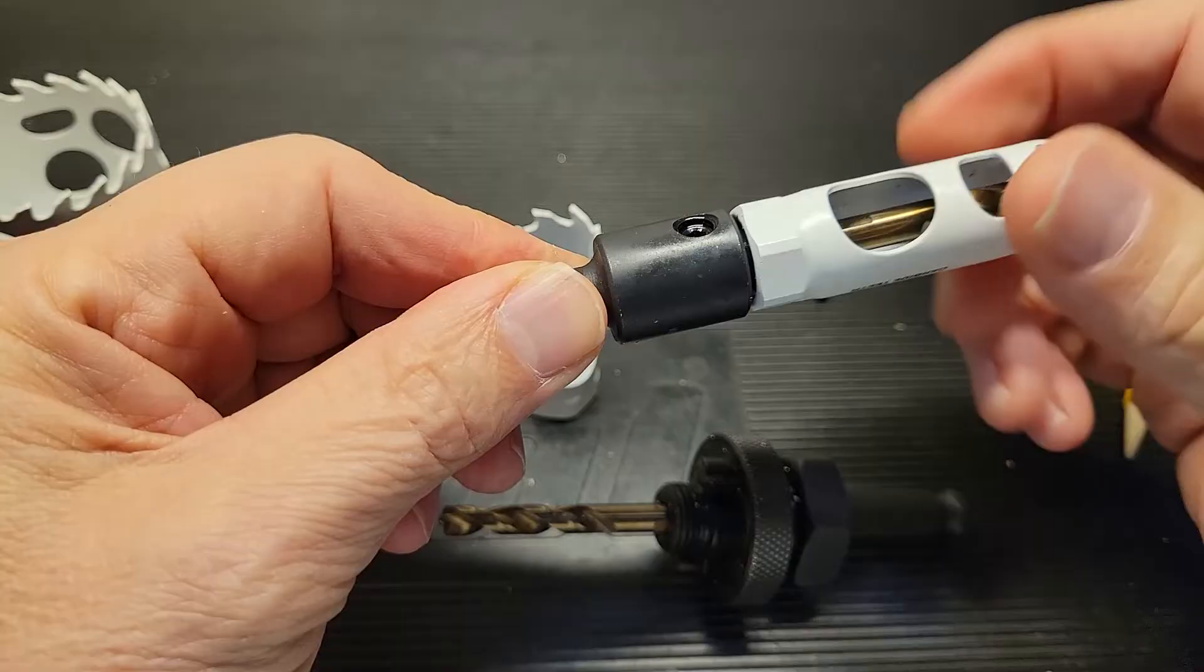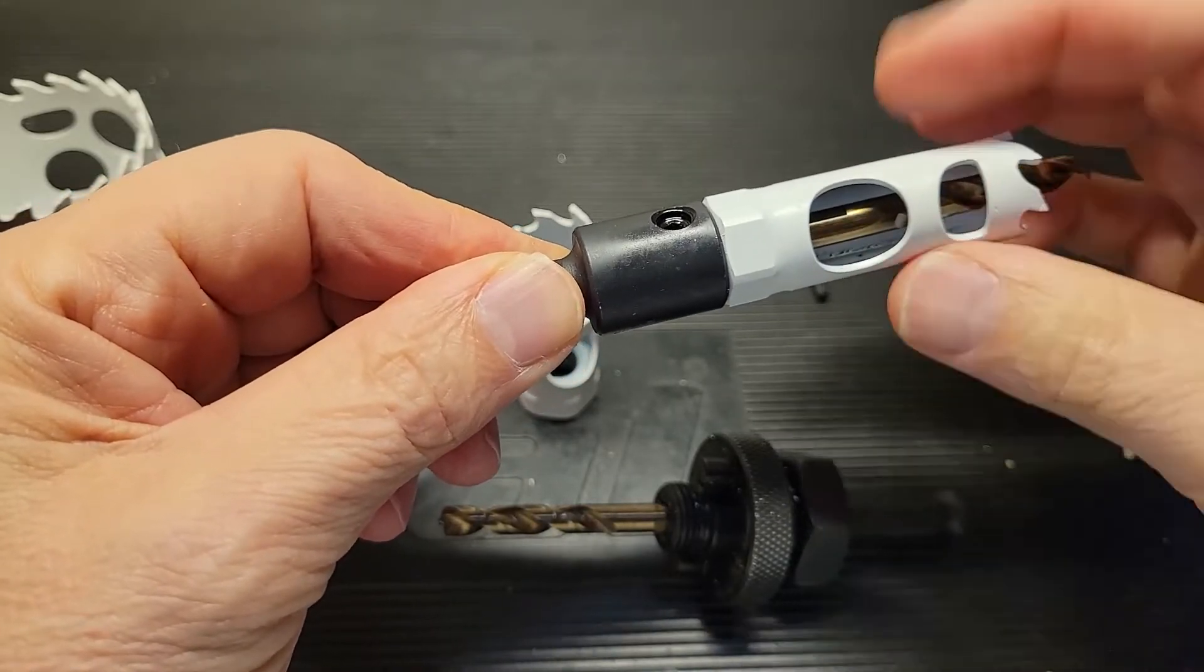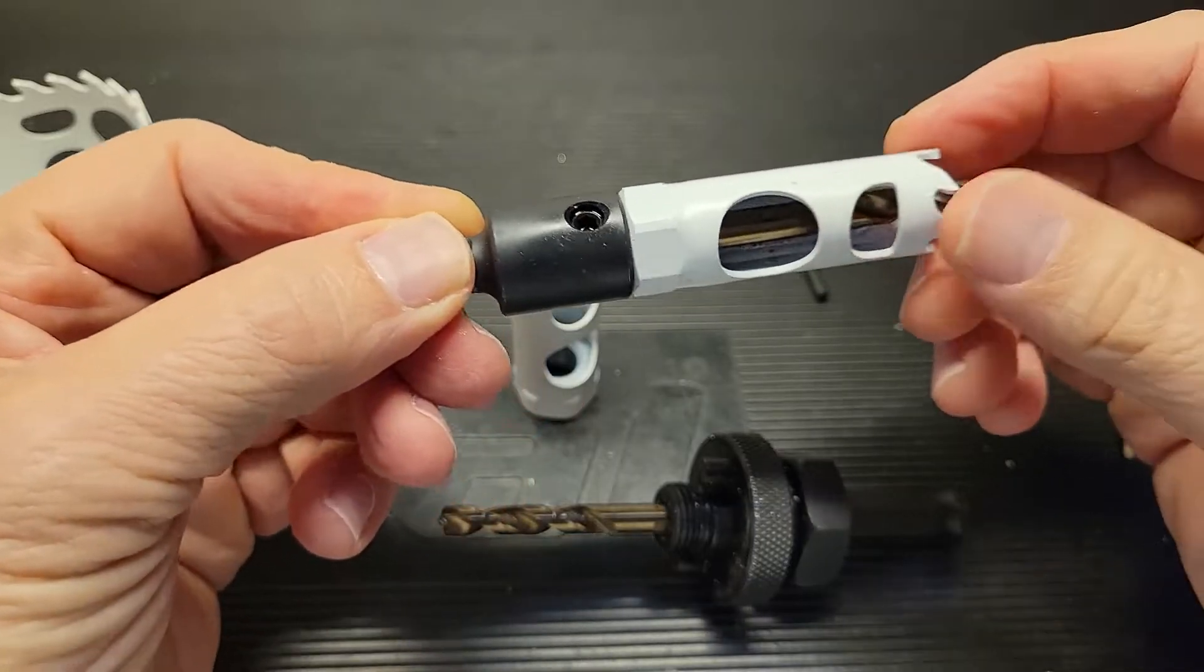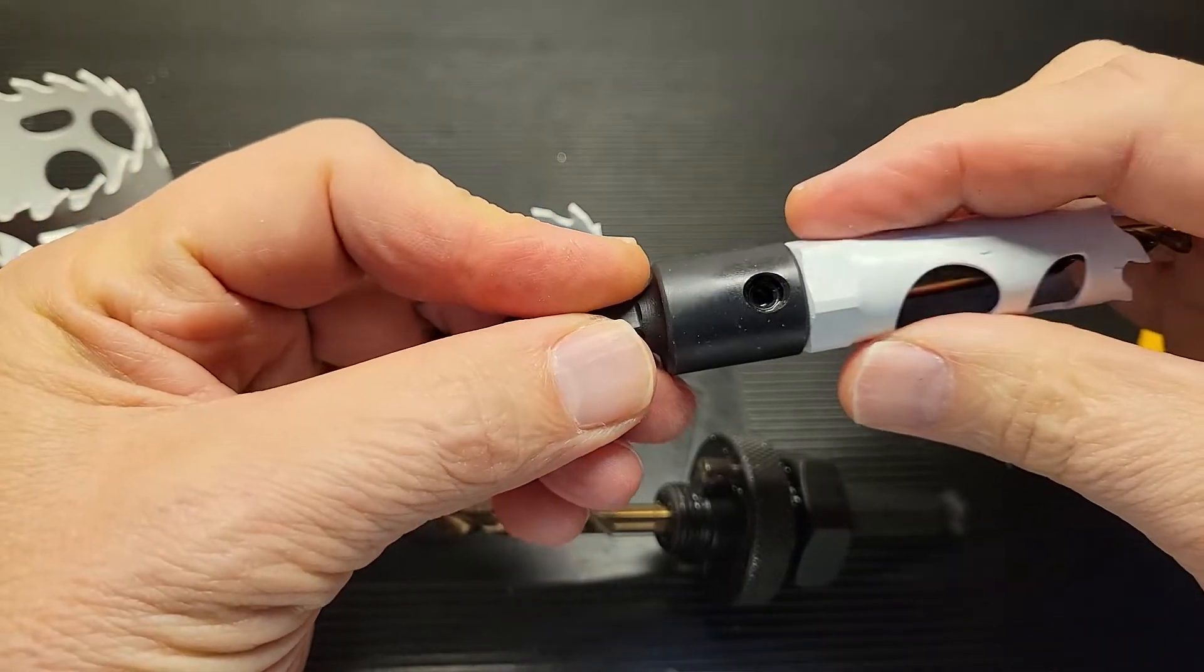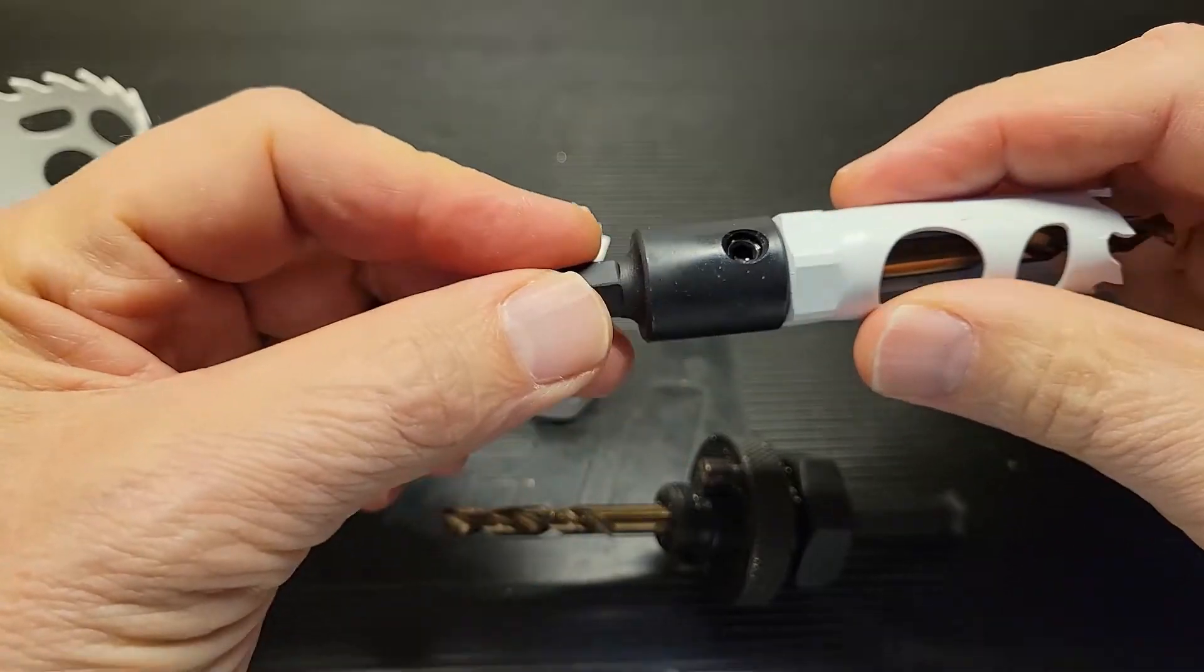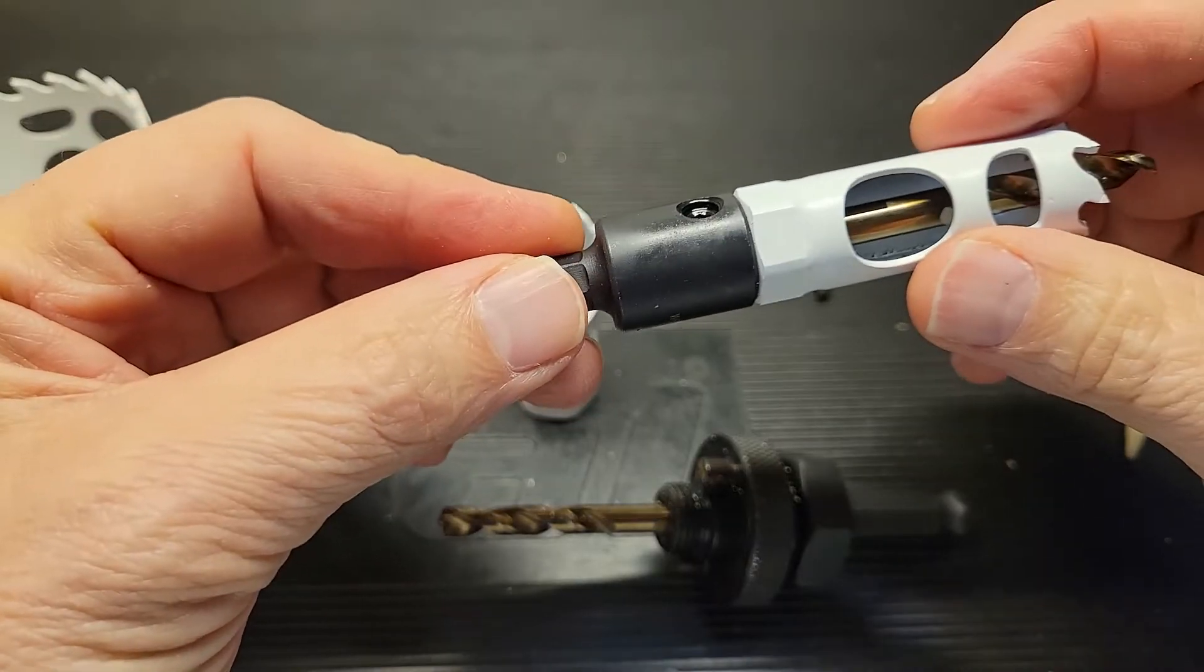And the reason is, once you snug this down, and again you're not going to tighten it, just put it on. Once it starts cutting, there's going to be force on this and it's going to basically get it stuck. You won't be able to undo this by hand once you've used the hole saw.